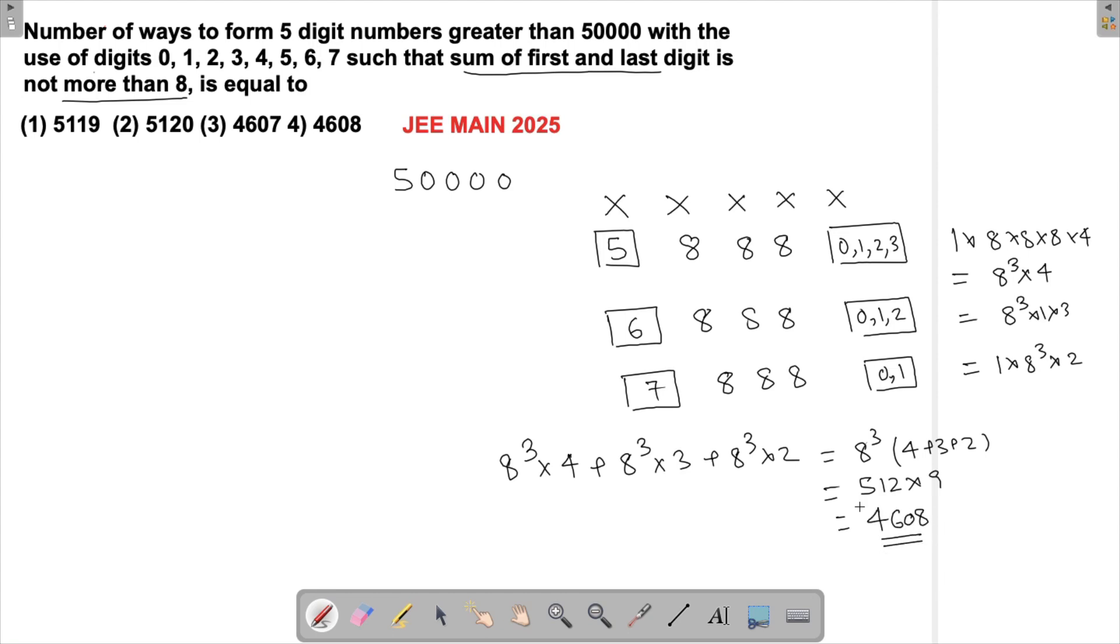If I look at this, there is an option 4608 as well, and I could have marked that. But remember in the first case, if I'm having the last place as 0 and all other places also as 0, that will be 50,000, which I don't want. So I've got to subtract one case, and I will get 4607, and this is my final answer.